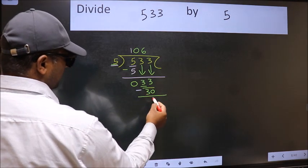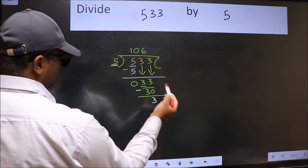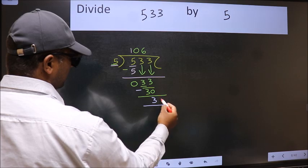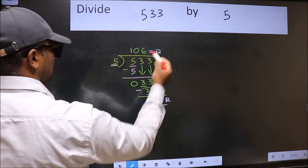Now we should subtract, we get three. No more numbers to bring down, so we stop here. This is our remainder and this is our quotient.